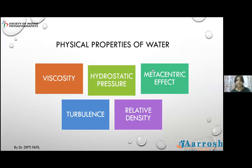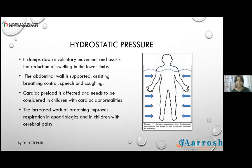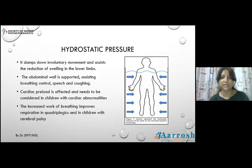Viscosity is the measure of resistance of a fluid being deformed by shear — the less viscous, the easier the movement. Water is actually more viscous than air, which helps in controlling movement. Moving water provides impedance, gives patients an opportunity for error correction, and provides resistance dependent on the weight and length of the lever arm. It also helps damp down involuntary movement and assists reduction of swelling in the lower limbs. The abdominal wall is supported, assisting breathing control, speech, and coughing. Cardiac preload is affected and must be considered in children with cardiac abnormalities.